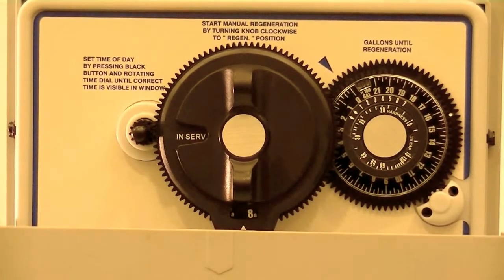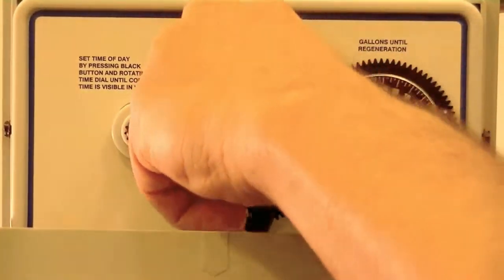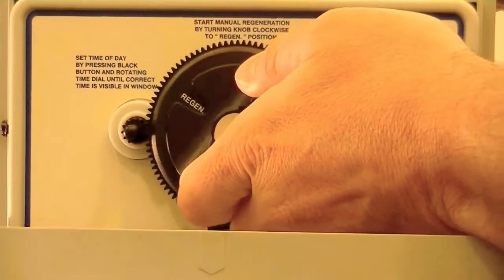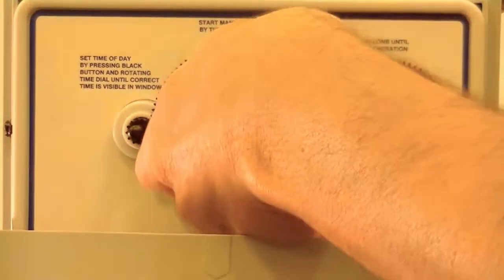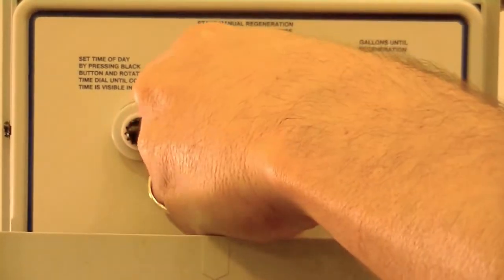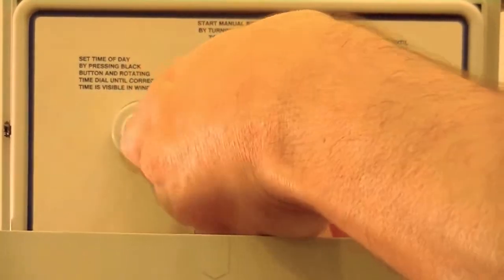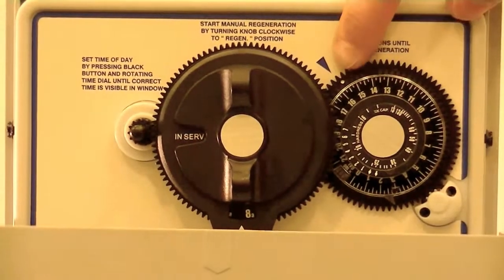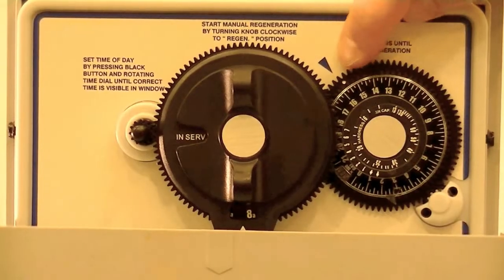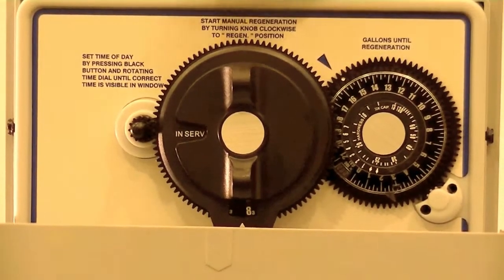And then once it starts a regeneration, simulate that, turn the dial, and as you can see in the window here, it tells you which stage of the regeneration that you're in. The total regeneration time is about 2 hours, and once it's back in service, you'll notice we're right back at our starting point, which is the blue arrow, the white dot, and we're right in between 15 and 16.